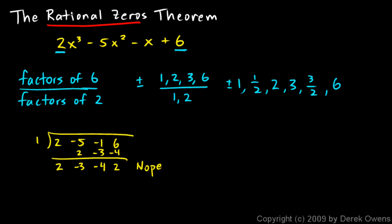So let's try the next one, 1 half. So we'll set up the synthetic division here: 2, negative 5, negative 1, 6. And we bring down the 2. 2 times 1 half is 1. And we add right here, and we get negative 4. Negative 4 times 1 half is negative 2. And we add there, and we get negative 3. Negative 3 times 1 half is negative 3 halves. And we add there, and we get 4 and a half, or 4.5. That one didn't work either.